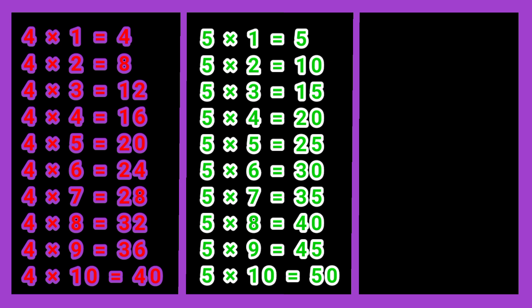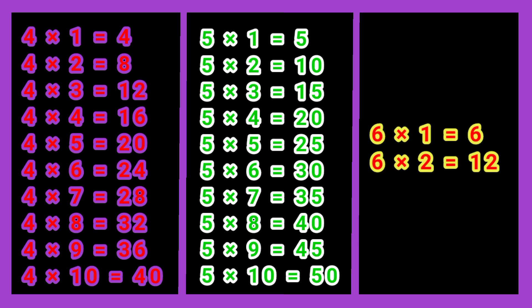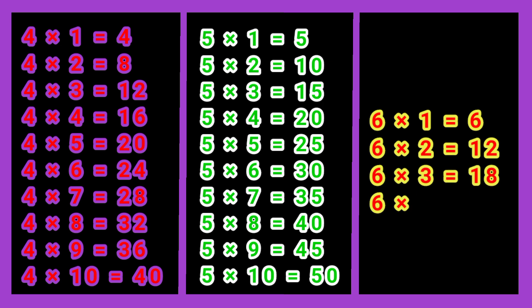Multiplication Table of 6. 6 times 1 jah 6. 6 times 2 jah 12. 6 times 3 jah 18. 6 times 4 jah 24.